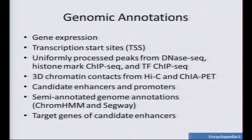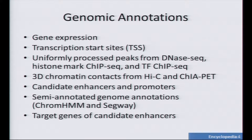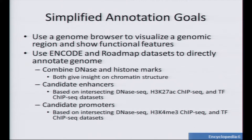Right now on the ENCODE project site, there are already a few different annotations available at different levels of complexity. You could just look at transcription start sites, uniformly processed peaks, or 3D contact information. Luca will talk about using hidden Markov models and ChromaHMM to actually do the segmentation, and you can do dynamic Bayesian nets. Today, though, I'm going to talk about making an annotation using candidate enhancers and promoters, based upon DNase-seq and histone marks, which both give information about chromatin structure.